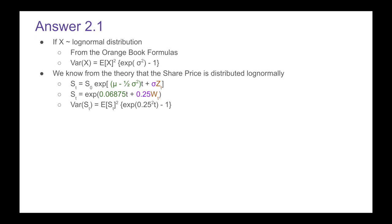Because we know this and we know the formula above, we know that the variance of the stock price at time t is going to be equal to the expected stock price at time t squared times the exponential of 0.25 squared t minus one.